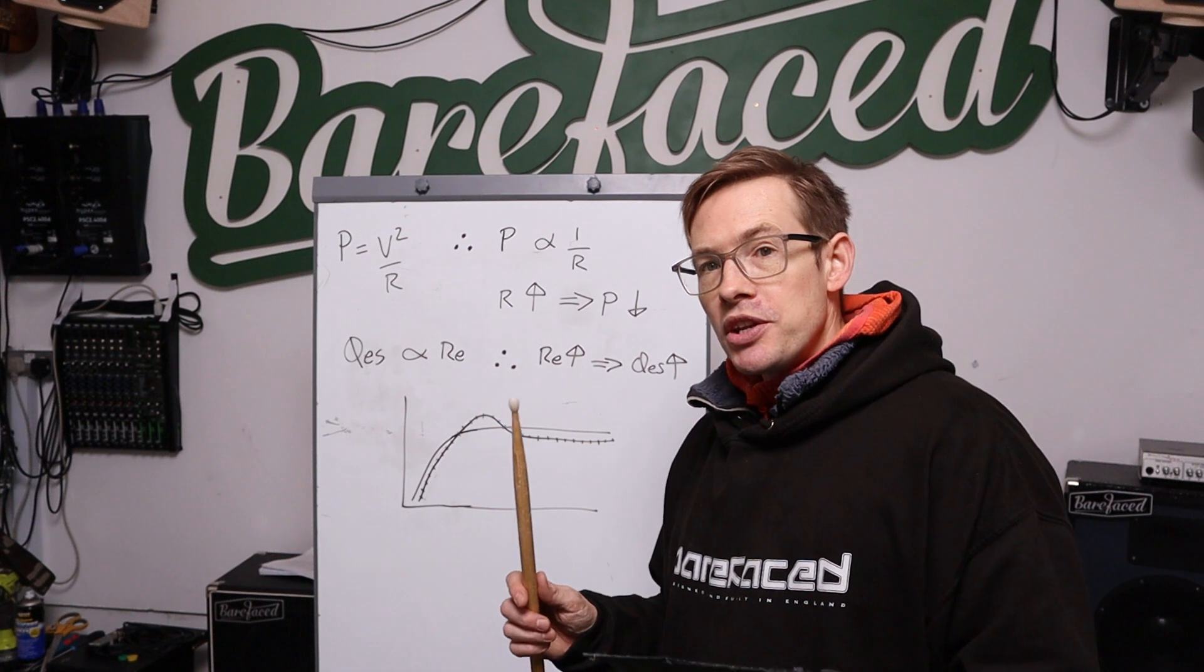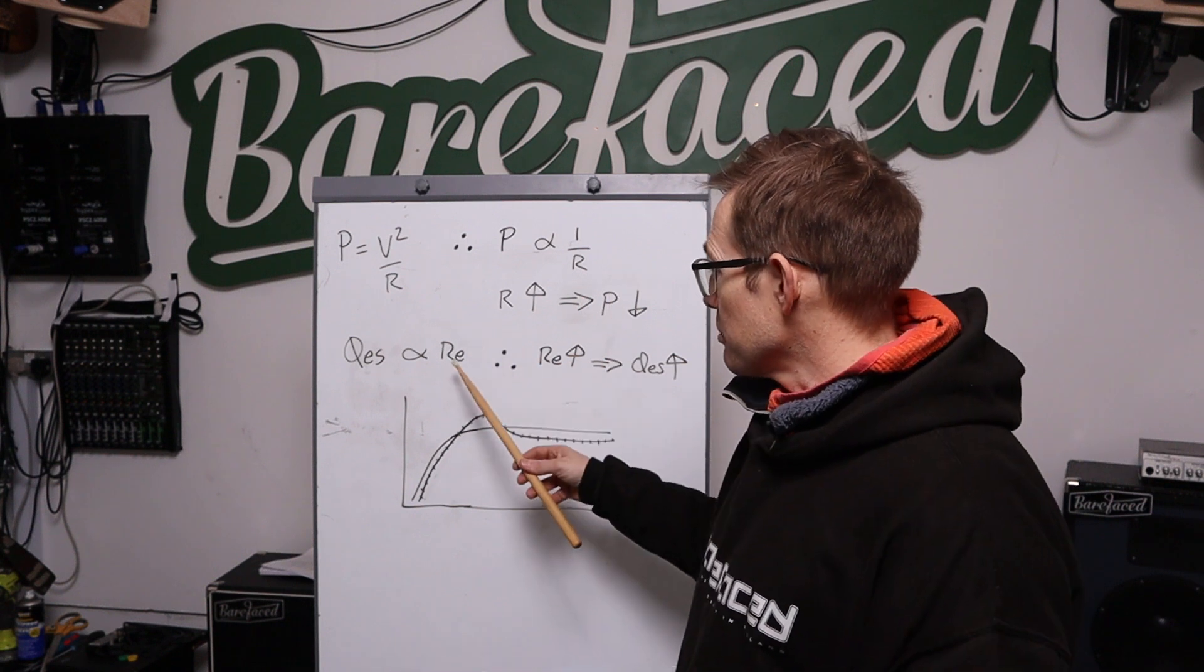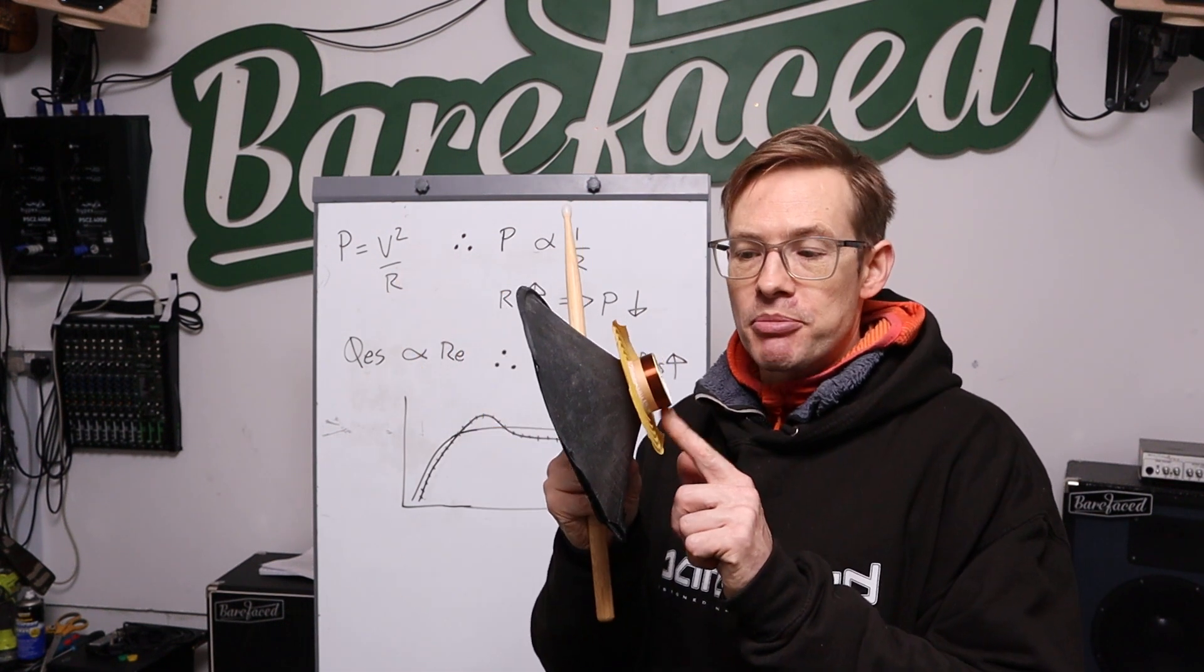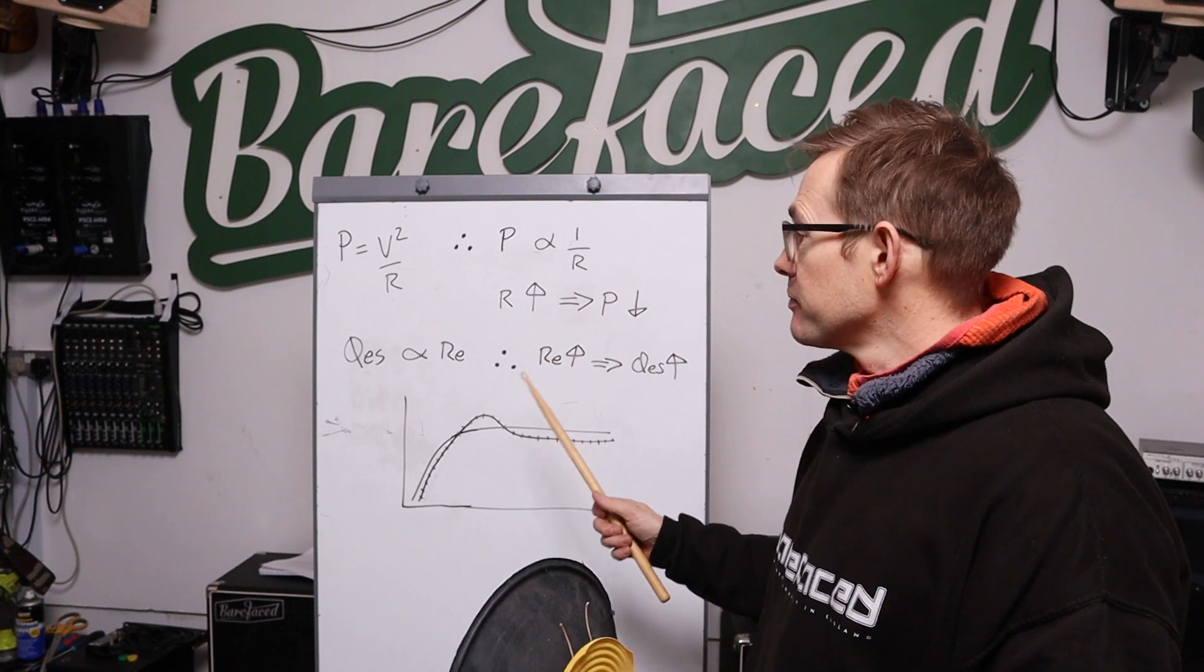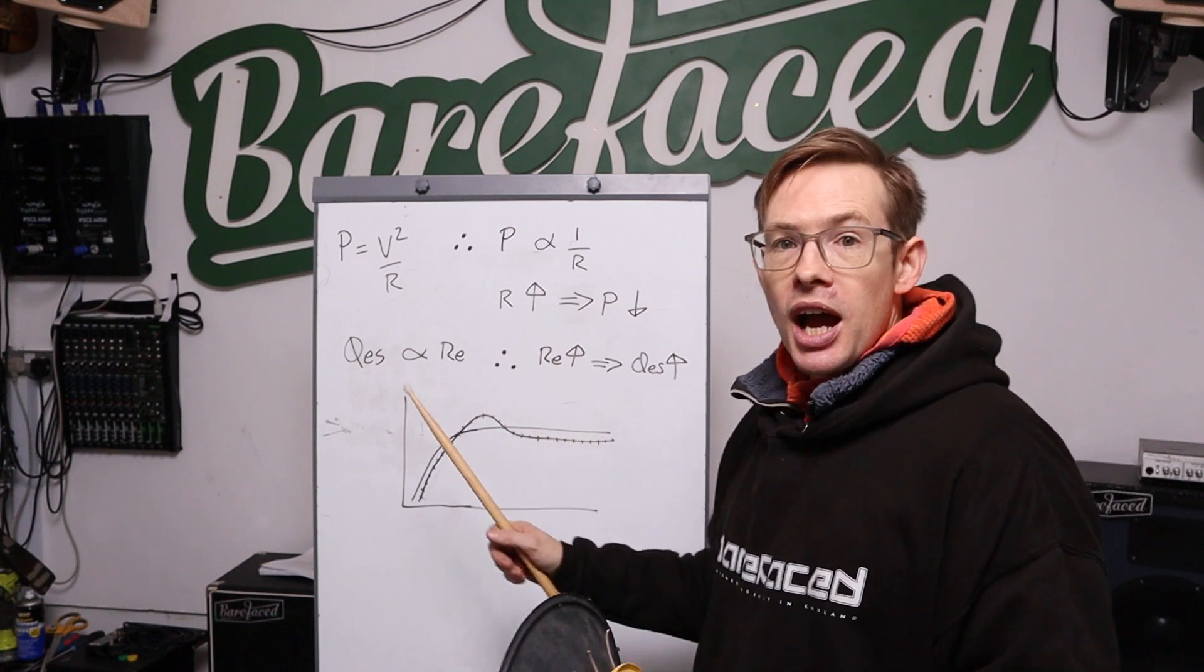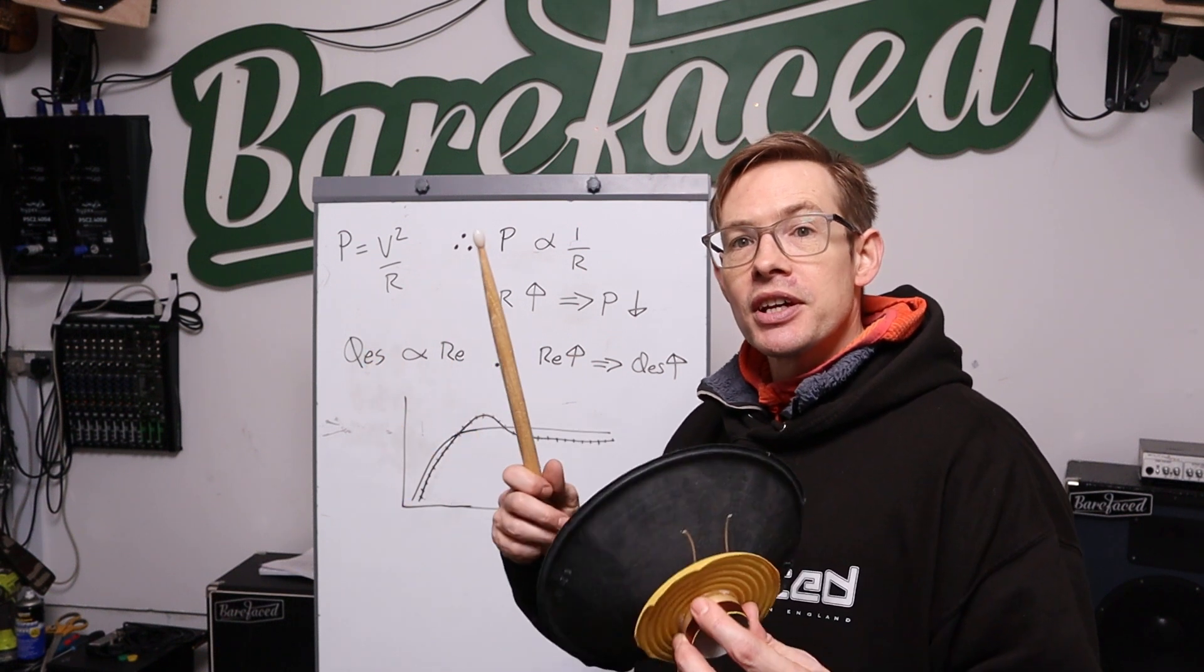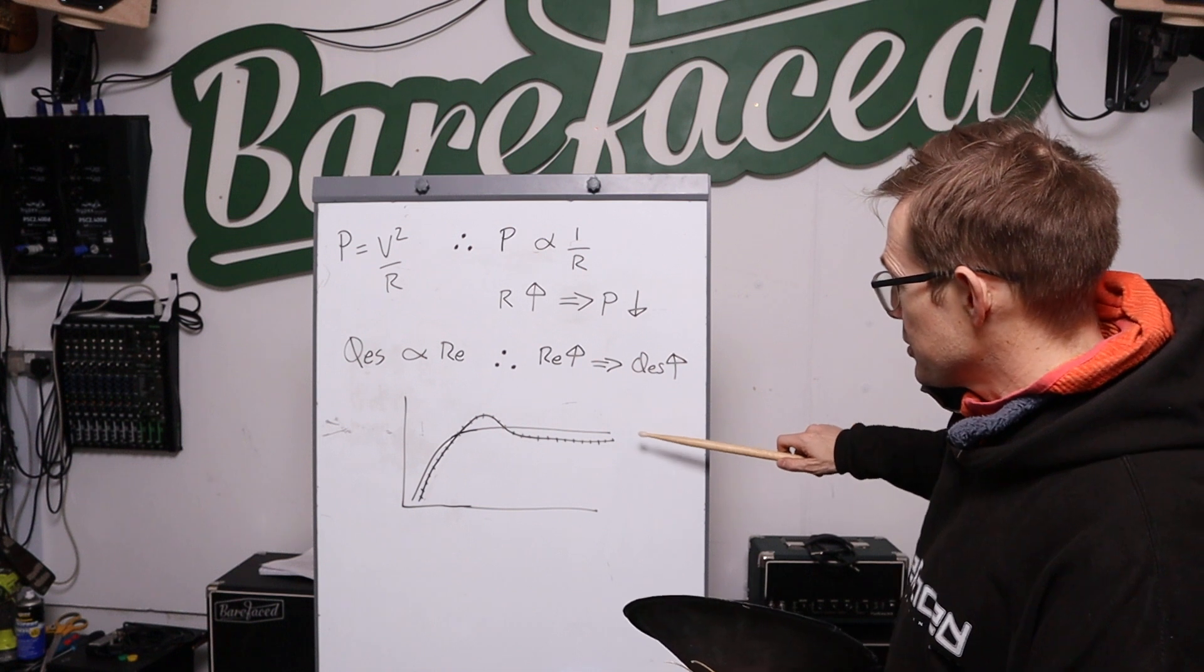However, when you play really loud and get your voice coils hot, the RE, so RE is the DC resistance of the speaker, it's not the impedance, it's the DC component of the impedance. When you play loud it gets hot, the RE goes up, and when the RE goes up the QES also goes up. When the QES goes up, the self-damping drops.